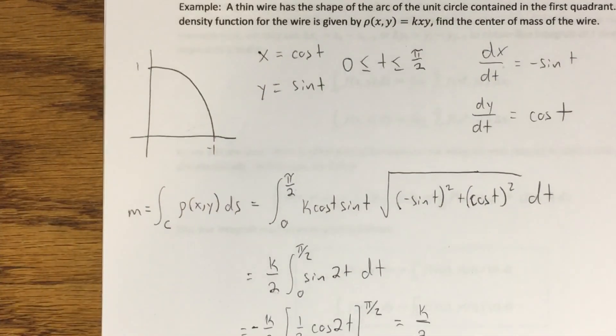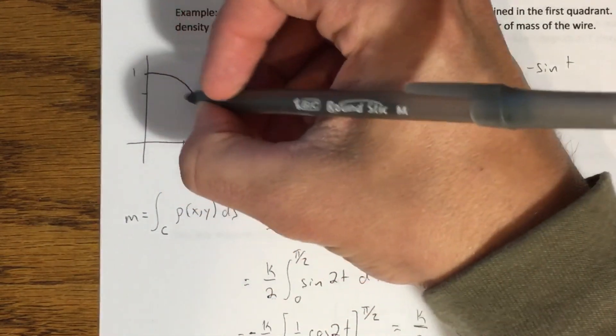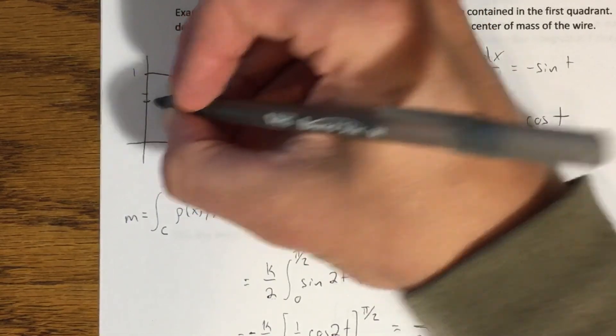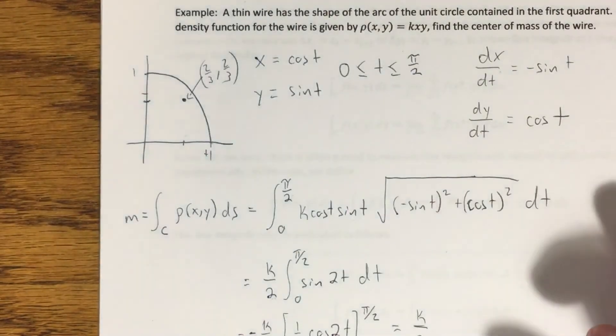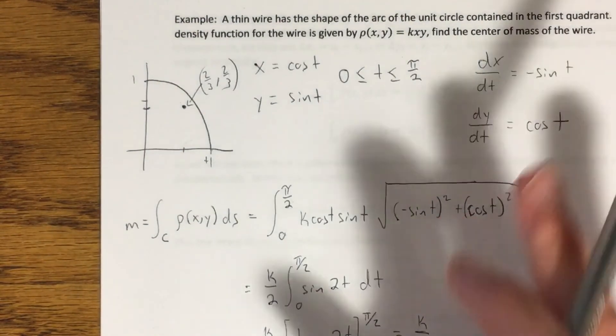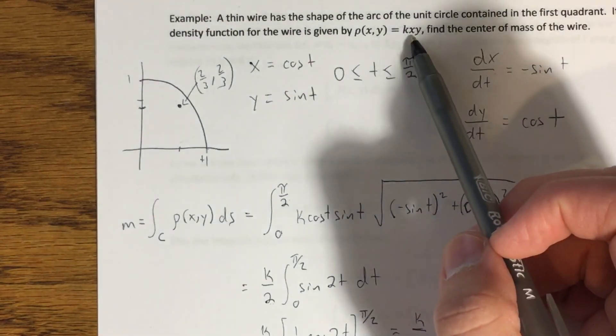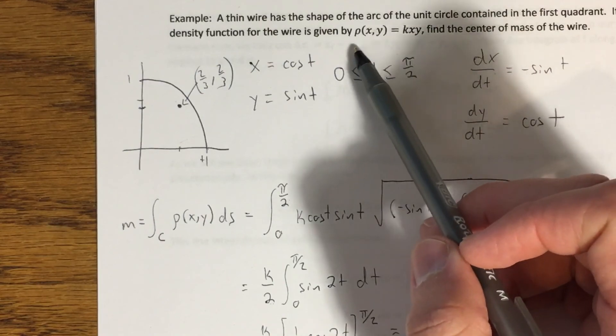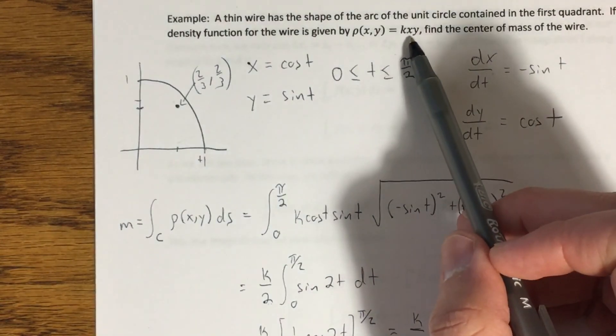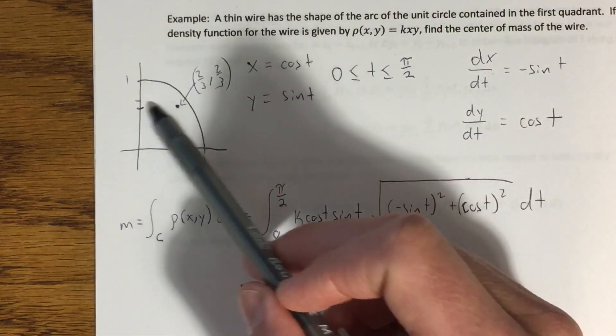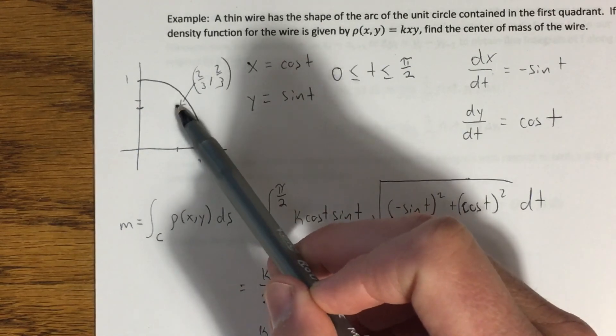I always like to go back and make sure that this is reasonable. So 2 thirds, 2 thirds is going to be right around here somewhere. That's not quite accurate. It's going to be right around there somewhere. 2 thirds, 2 thirds. Now, that does seem pretty reasonable if you think about our density function. K x y, we're in the first quadrant where all of your x's and y's are positive, which means the density is going to be greater as x and y are both larger. So if this point gets too close to either axis, this density function is going to become relatively small. So this point is an equal distance away from both our x and our y axis. You would expect the point to be kind of far from both axes relative to that wire. So that's kind of what we're seeing here.